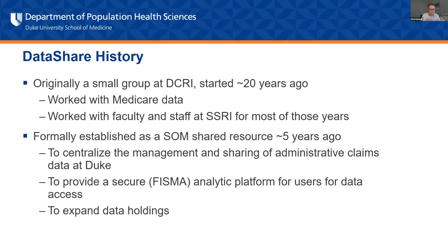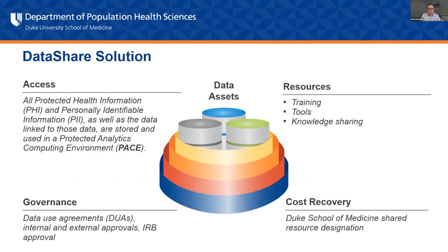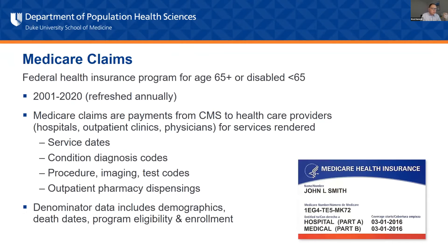That difficulty led us to establish the Data Share as a shared resource — an official School of Medicine designation. What that really did was centralize the management and sharing of administrative claims data. It also allowed us to argue that we needed a secure analytics platform for users, because the government was essentially saying they weren't sure we could hold their data unless we could prove we had this analytic platform. Finally, it allowed us to do cost recovery with users so that we could expand our data holdings. Our biggest holdings are Medicare claims — probably the most relevant to what we're discussing today, as it's the federal health insurance program for folks over age 65.